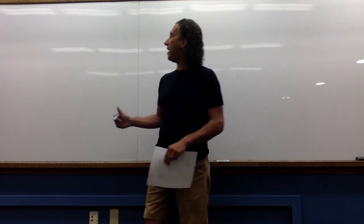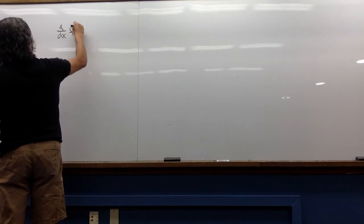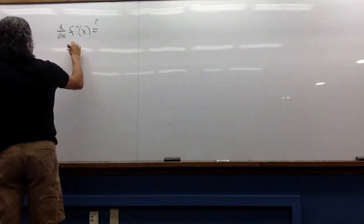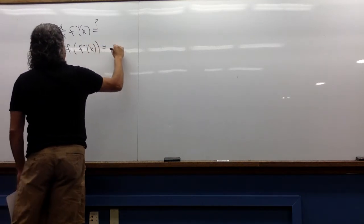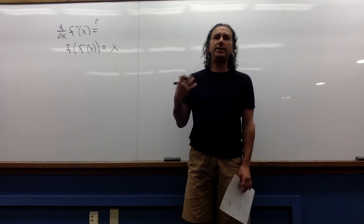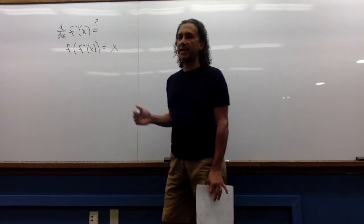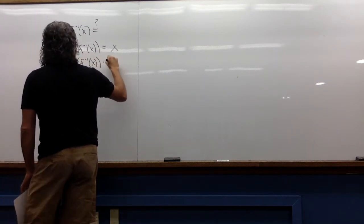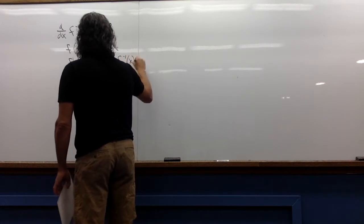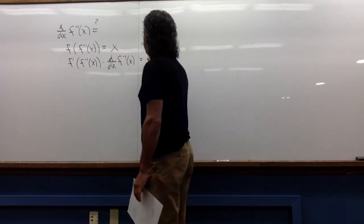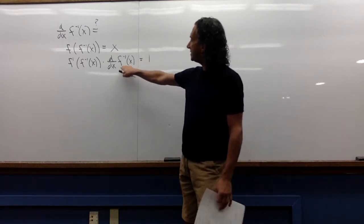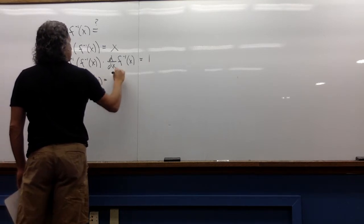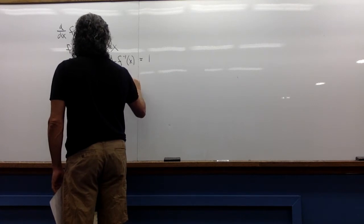Let's say I'm trying to find the derivative of some inverse function — I'm looking for a shortcut for that derivative. We know that f composed with f inverse of x is just x, because the inverse function undoes the original function. If I take the derivative of both sides, I get f prime of f inverse of x times the derivative of the inside — that's the chain rule — and that equals 1, because that's the derivative of x. So I can solve for this: the derivative of f inverse of x is 1 over f prime of f inverse of x.